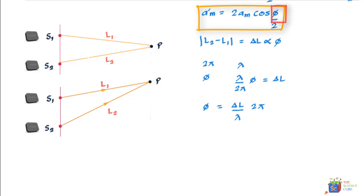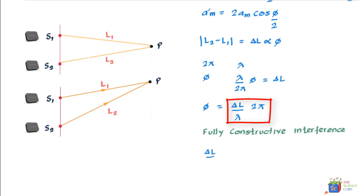Fully constructive interference happens when φ equals 0, 2π, 4π, or any integer multiple of 2π, because that's when you get maximum amplitude of 2aₘ. For fully constructive interference, φ = m × 2π, where m is an integer: 0, 1, 2, 3, and so on. If φ = m × 2π, then (ΔL/λ) × 2π = m × 2π. Therefore, ΔL = mλ, which is the condition for fully constructive interference.